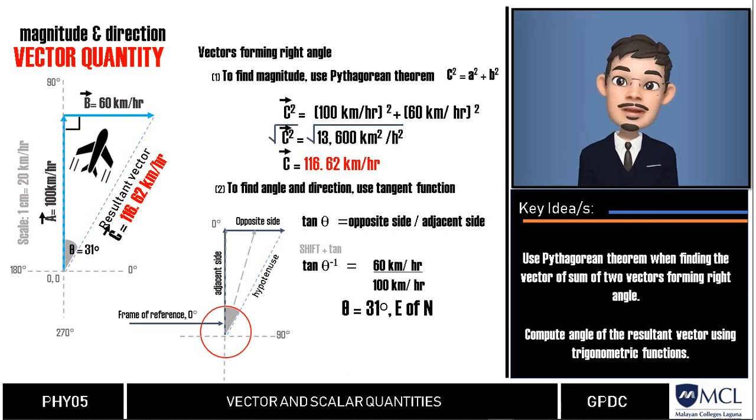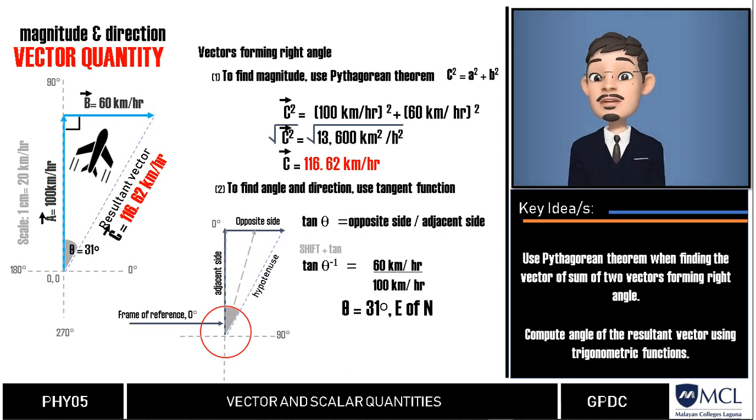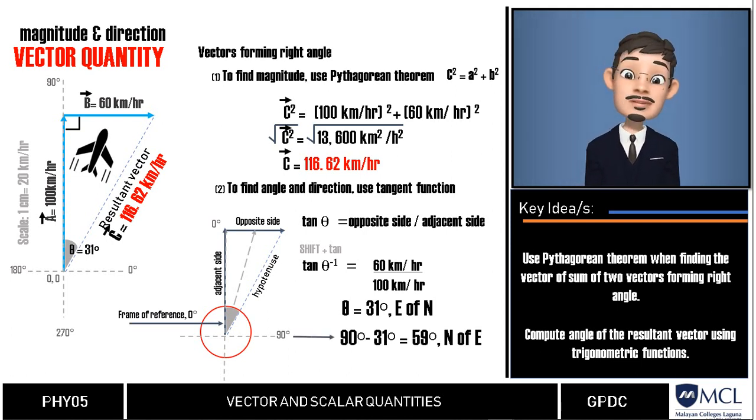If we want to use east, the direction of the wind, as our frame of reference, we can simply subtract 31 from 90 degrees to get 59 degrees. Once again, from north axis going to east, the final vector of the plane is 116.62 km per hour, 31 degrees east of north.